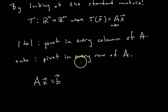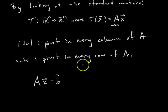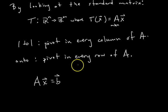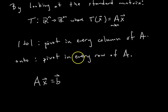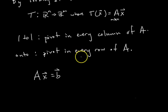In summary, if you're looking at the standard matrix of a transformation: is there a pivot in every column? If so, the transformation is one-to-one. Is there a pivot in every row? If so, the transformation is onto. In the next video, we'll talk about how, if you're considering a transformation geometrically, you can determine what the standard matrix of that transformation has to be.